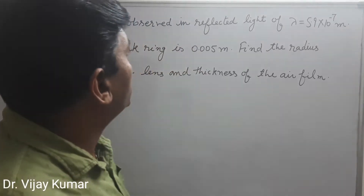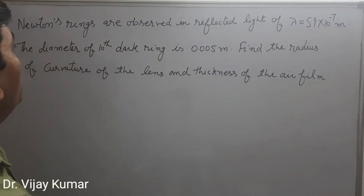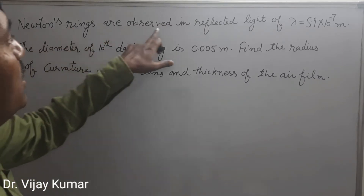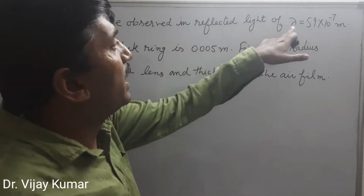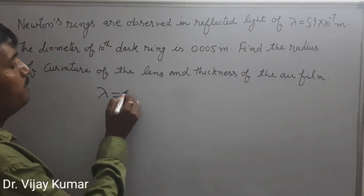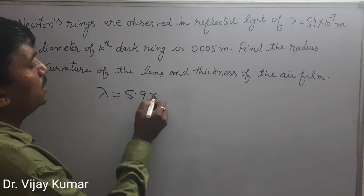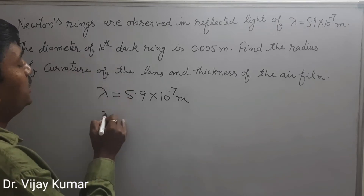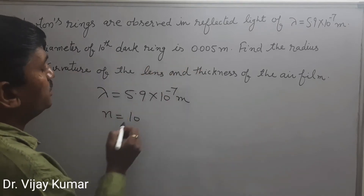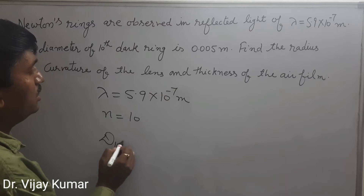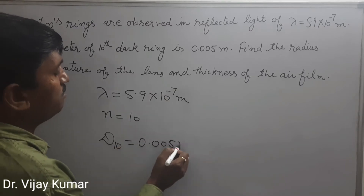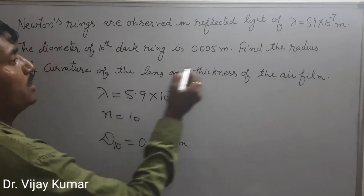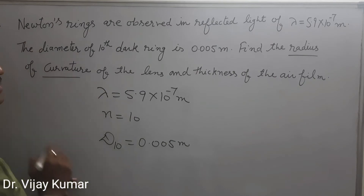The first problem is on Newton's ring experiment. Newton's rings are observed in reflected light of wavelength 5.9 × 10⁻⁷ meter. The diameter of the 10th dark ring is 0.005 meter. Find the radius of curvature of the lens.